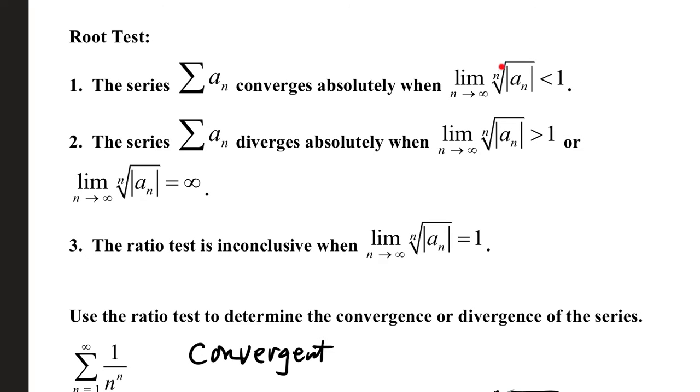In these, we're going to take the limit as n goes to infinity of the nth root of our absolute value of the a sub n term from our series. Less than 1 is convergent, greater than 1 or infinity is divergent, and equal to 1 is inconclusive.